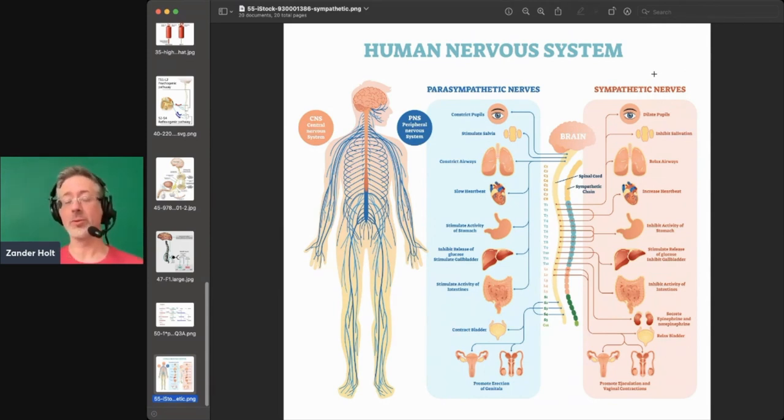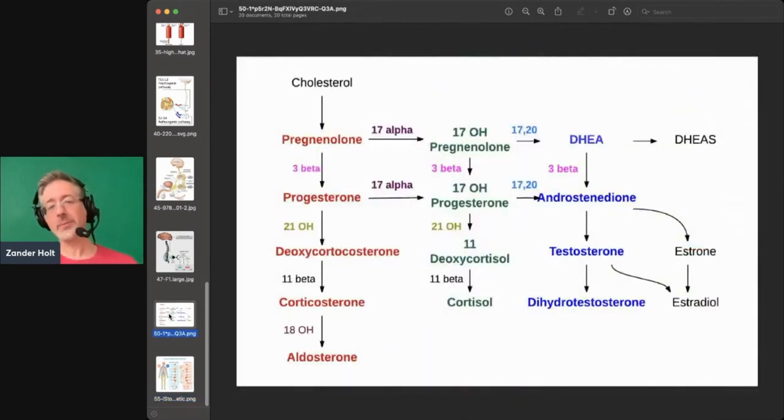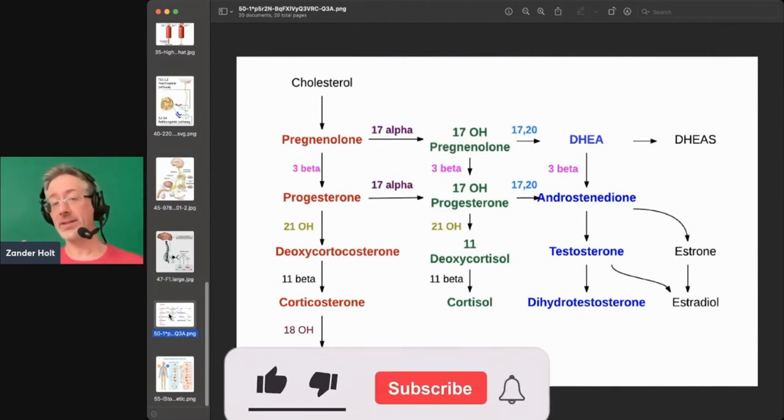Cortisol is the stress hormone, and the reason that's important is I'm going to show you here on this chart. It greatly affects what kind of hormone we're going to make.